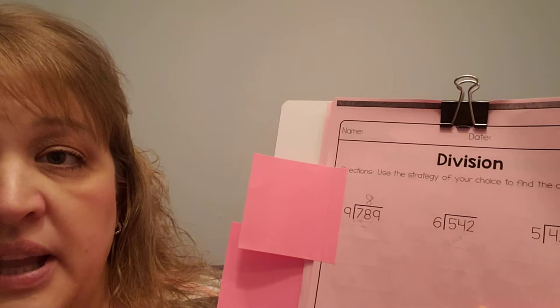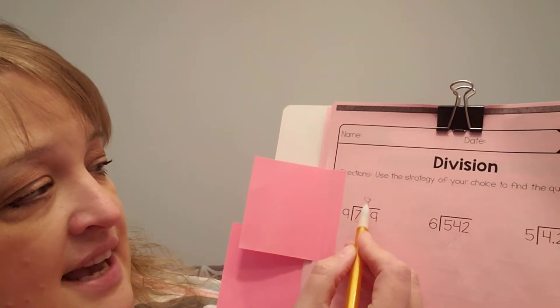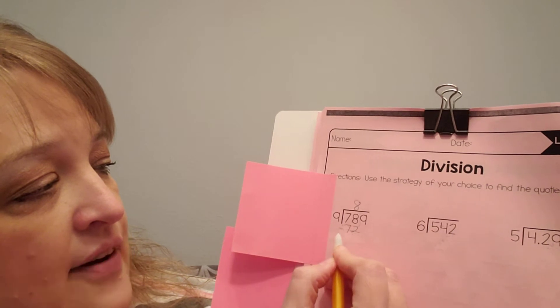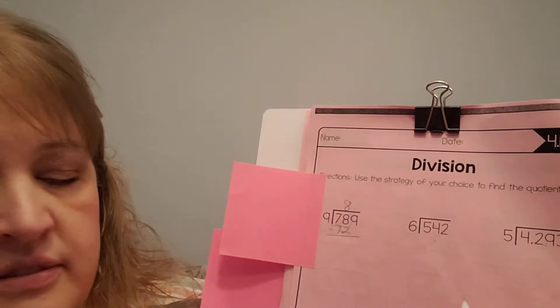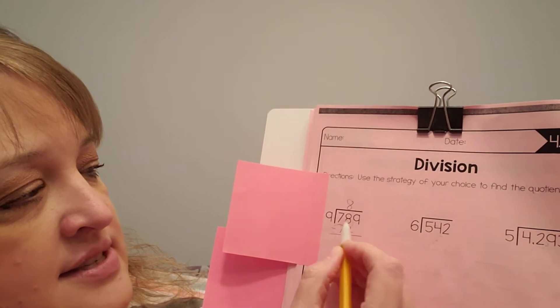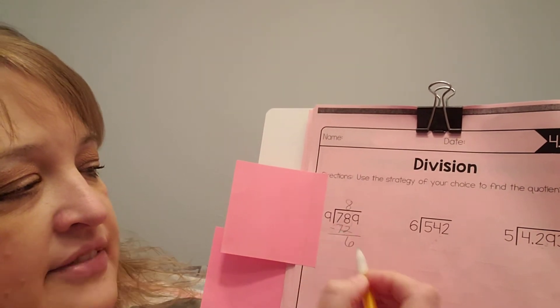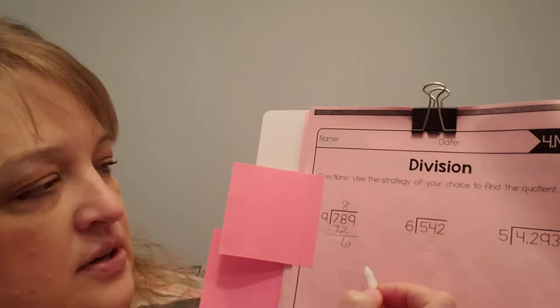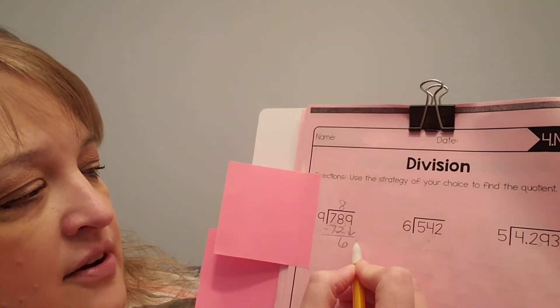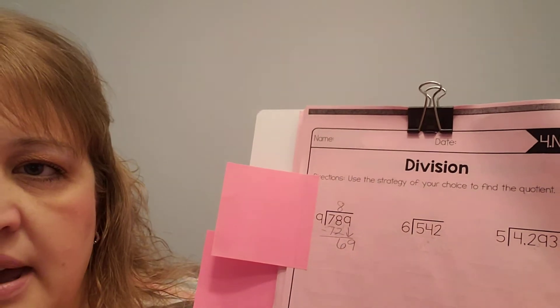Okay, now I'm going to multiply. 9 times 8 is 72. Now I'm going to subtract. 8 minus 2 is 6, and 7 minus 7 is 0. Okay, so I don't need to write that down. Then I'm going to bring down the 9.